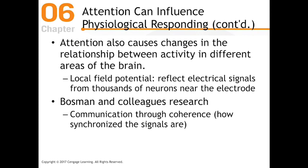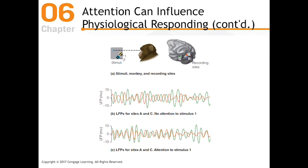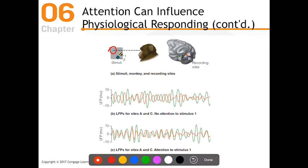In this particular experiment, they were interested in coherence — a measure of how synchronized the signals are. A monkey has a fixation point, a blue dot, and there are two different kinds of stimuli: stimulus one and stimulus two. The recording sites are really important — A and B are in V1, the occipital cortex, and location C is in the temporal cortex. They wanted to see not the size of firing, but the relationship between the different electrode placement sites.